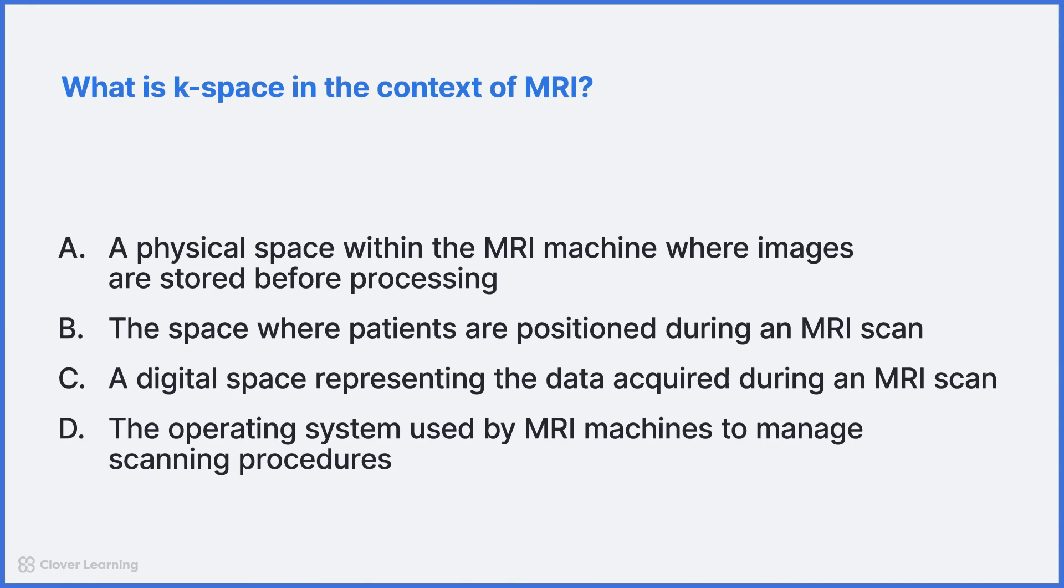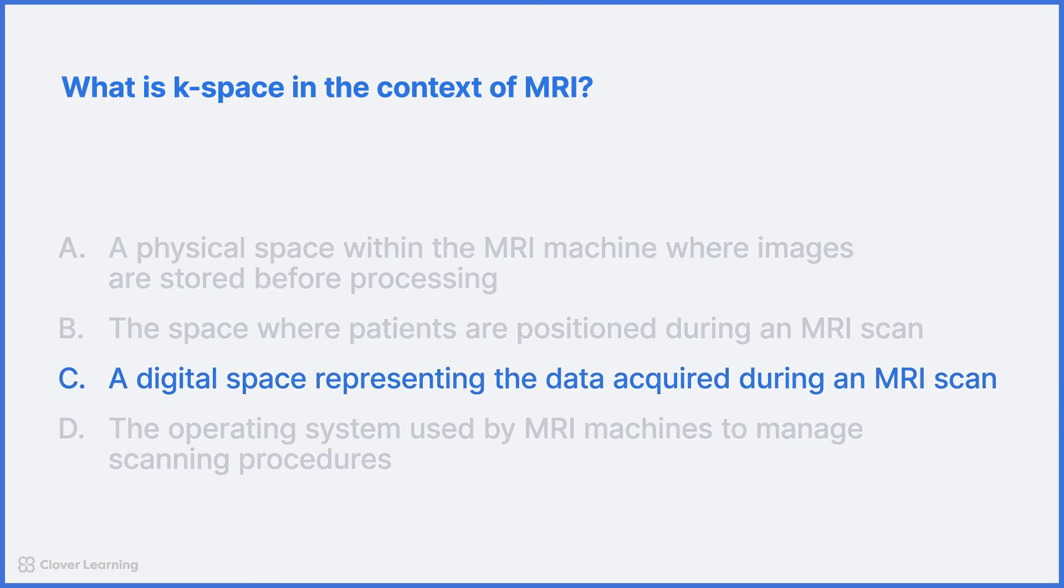Let's try a practice question to test your understanding of k-space. What is k-space in the context of MRI? A. A physical space within the MRI machine where images are stored before processing. B. The space where patients are positioned during an MRI scan. C. A digital space representing the data acquired during an MRI scan. D. The operating system used by MRI machines to manage scanning procedures. Correct answer? C. A digital space representing the data acquired during an MRI scan.